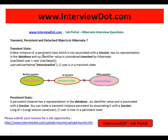What is transient, persistent, and detached objects in Hibernate? A transient object is a new instance of a persistence class which is not associated with the session, has no representation in the database, and has no identifier value. For example, you have an entity class called UserDetail — you just created it in JVM memory, but there is no corresponding database row and no association with the session. This is called the transient state.